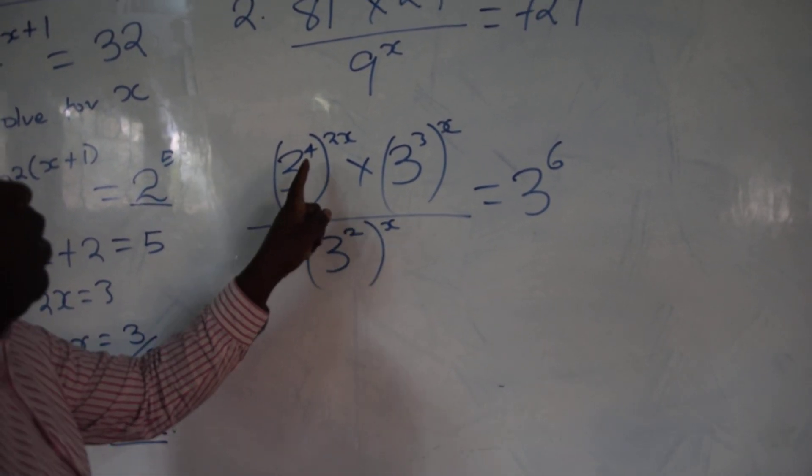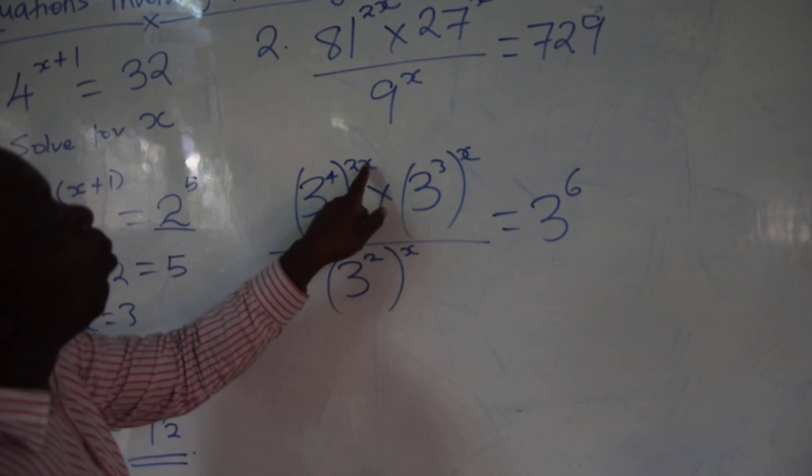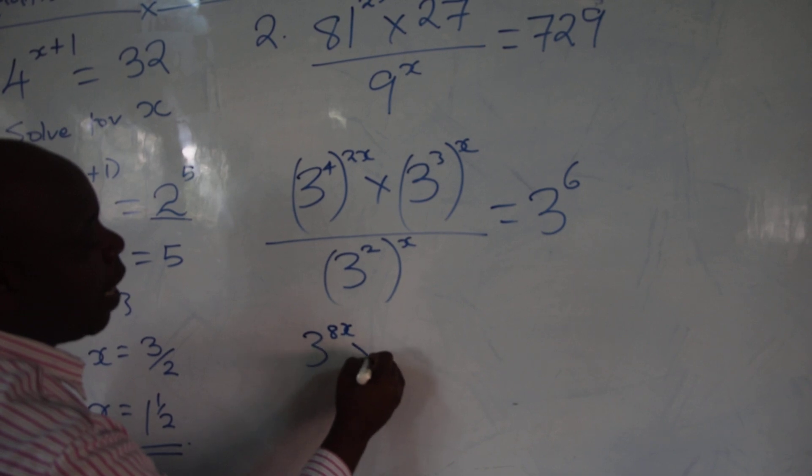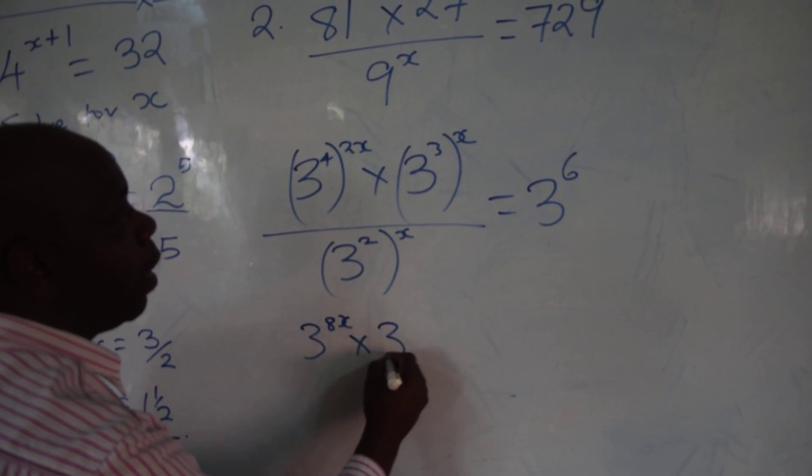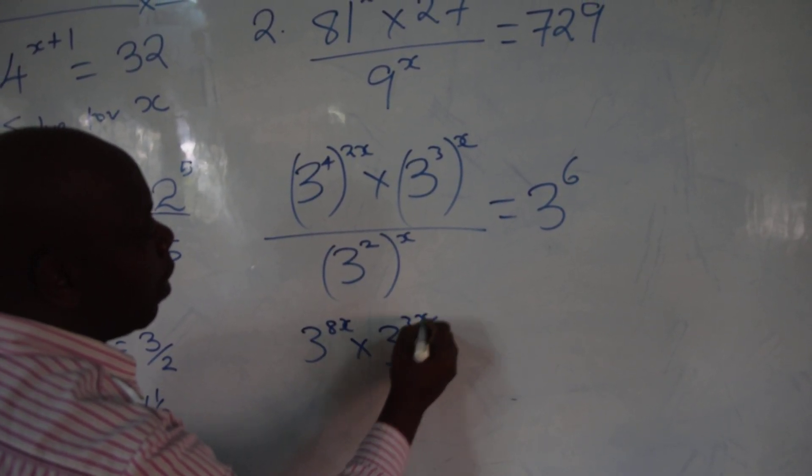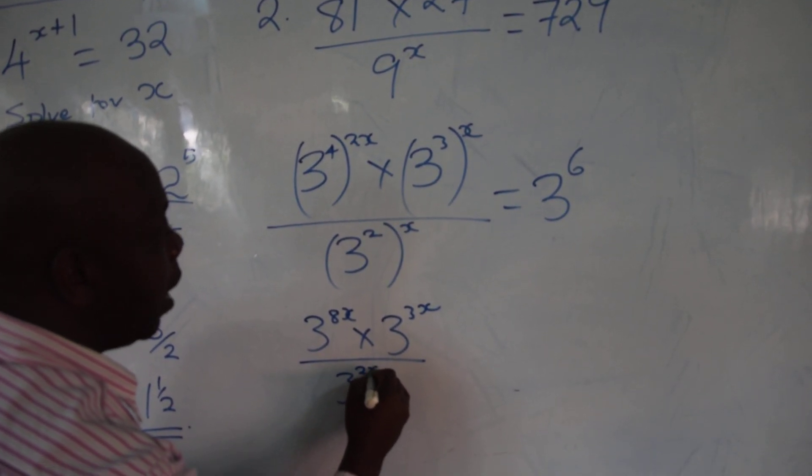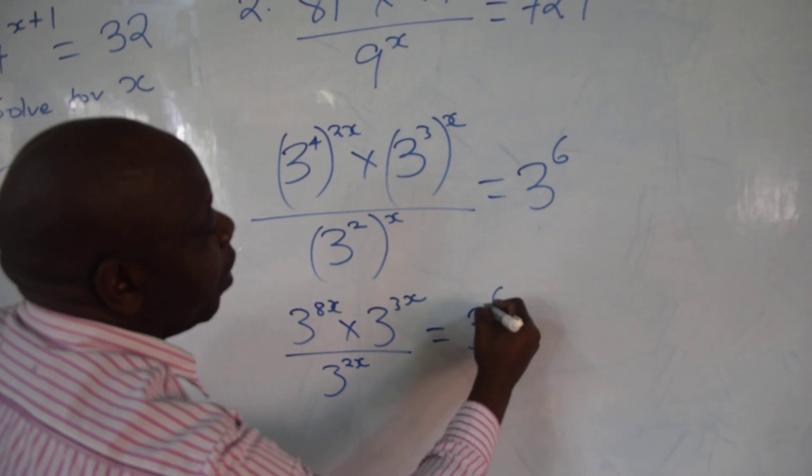From there, we say, power and power, you multiply. So you have 3 power 8x times 3 power 3x over 3 power 2x equals to 3 power 6.